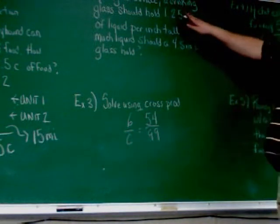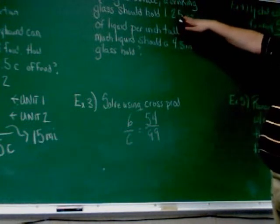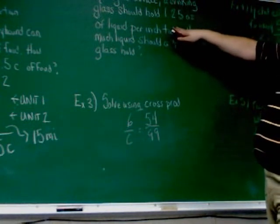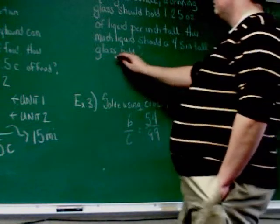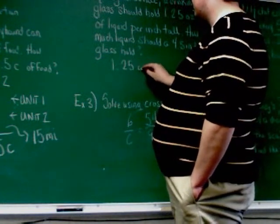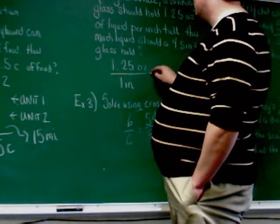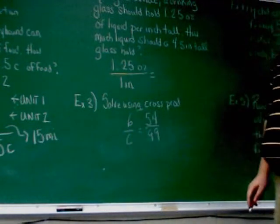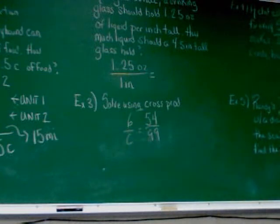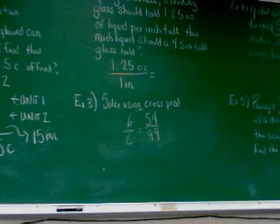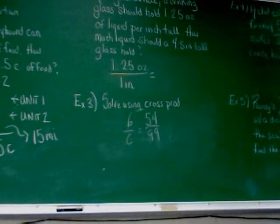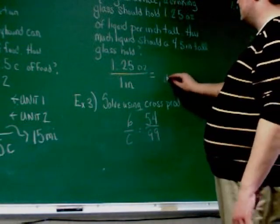We start off with the first set of information here. If it's 1.25 ounces, it should be an inch tall. So, I'm going to write 1.25 ounces over 1 inch. Now, I want to know about a 4 and a half inch tall glass. Again, units have to be consistent. As you can see, I've got inches on the bottom. So, on the other side, it's going to have to stay on the bottom. Four and a half inches has got to go down here.